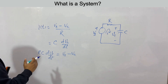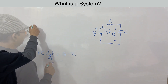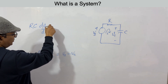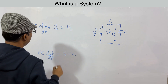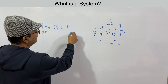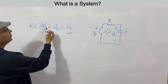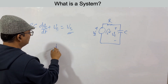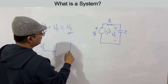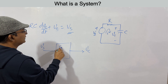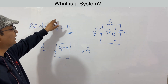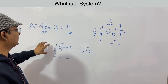Rearranging: RC·dVc/dt + Vc = Vs. Here Vs is the input and Vc is the output. We have a relation between input and output — this is a continuous time system transforming the input signal Vs into the output signal Vc. This is the meaning of a system.